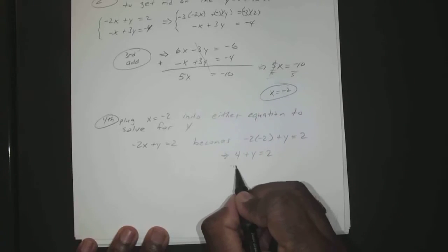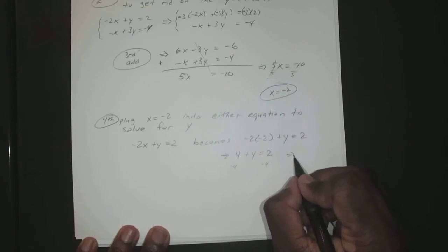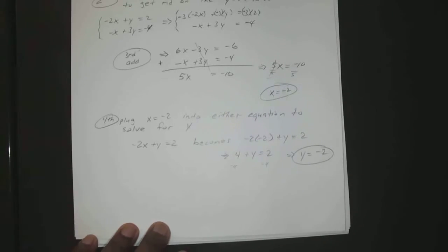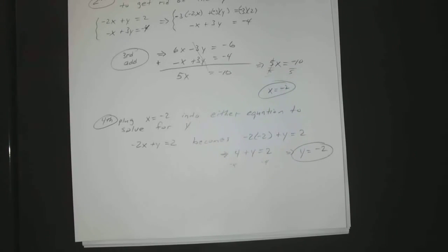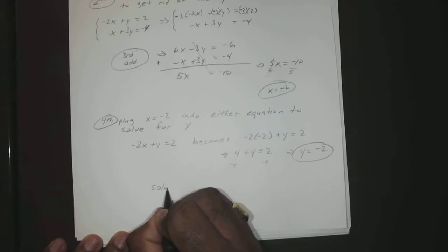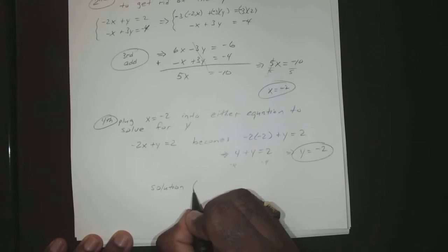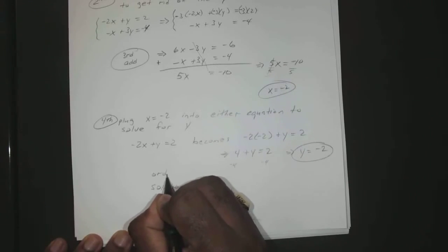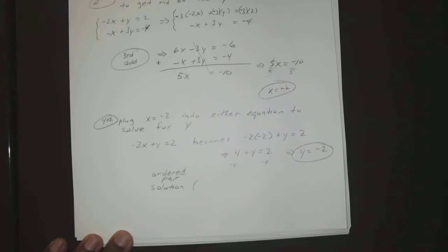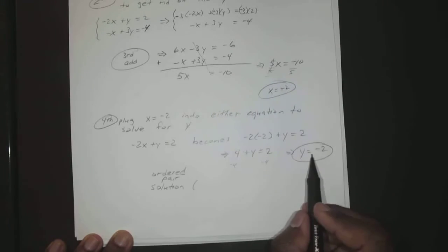So you subtract 4 from both sides, we have y = -2. Okay, so you have your ordered pair solution of -2, -2.